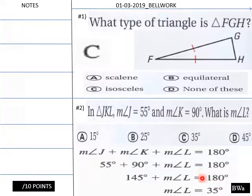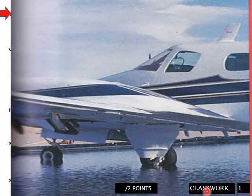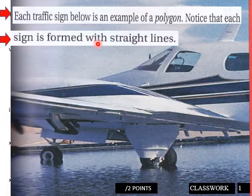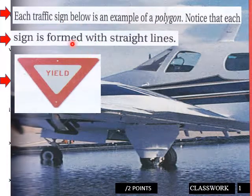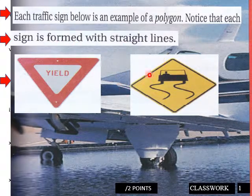Okay, this is slide one in our classwork. Each traffic sign below is an example of a polygon. Notice that each sign is formed with straight lines, so these are polygons.